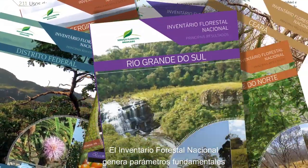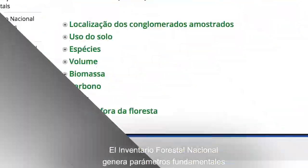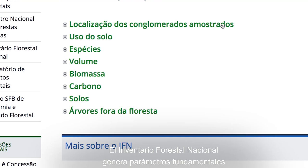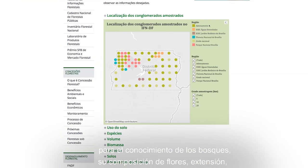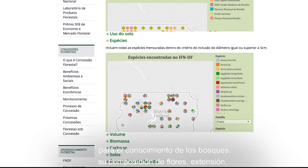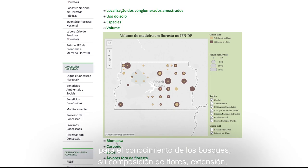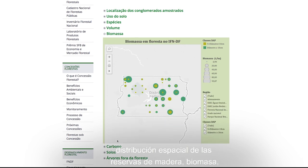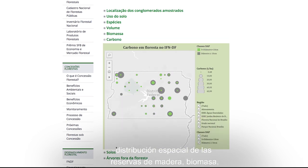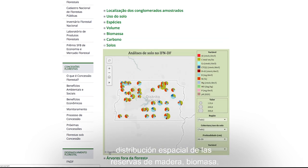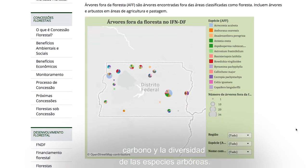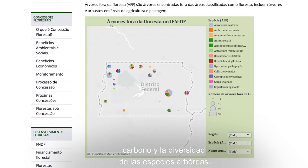The Inventário Florestal Nacional creates fundamental parameters for knowledge of the forest, such as its floristic composition, extension, spatial distribution of material, biomass, carbon, and the diversity of species.